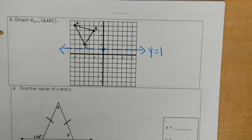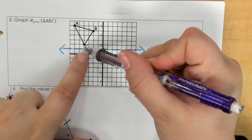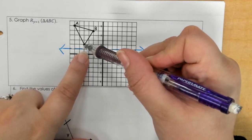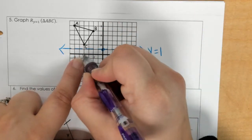So this is y equals 1. Now I need to reflect it. So if I start here with the c, this c is only 1 unit above y equals 1, so I go 1 unit below. So here is c prime.